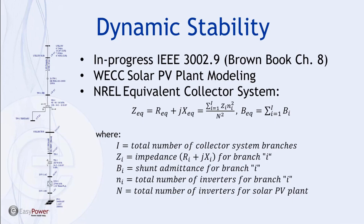Effectively, you take a lumped equivalent for each type of inverter and PV array — in this case we only have one type shown — a lumped equivalent for the inverter step-up transformers, create a single equivalent circuit representing the collector system, model your main transformer, and then model as much of the utility electrical system as you're interested in representing.